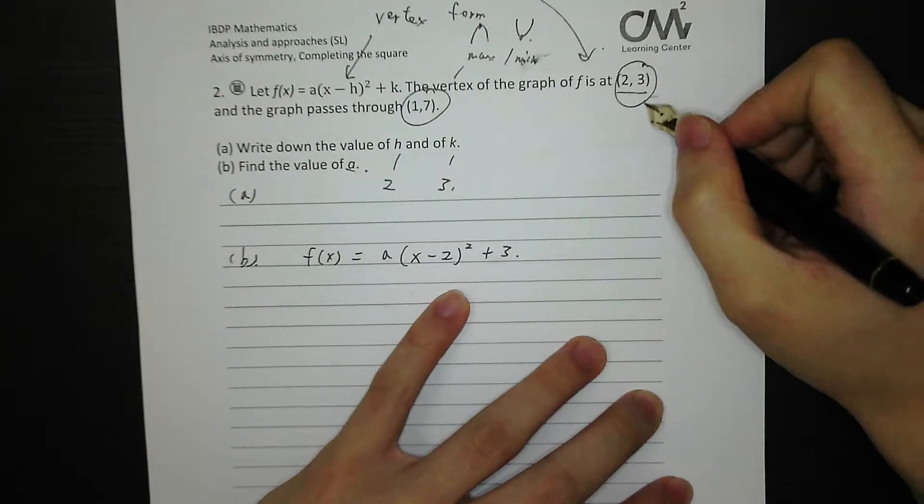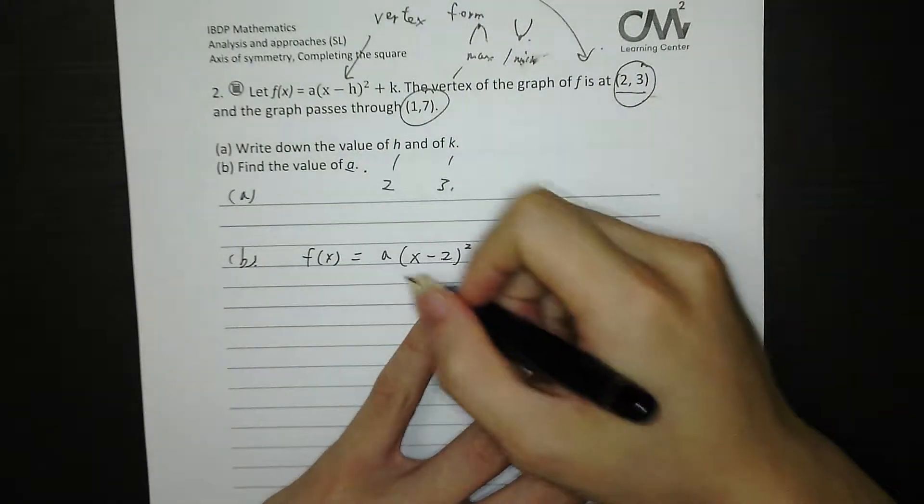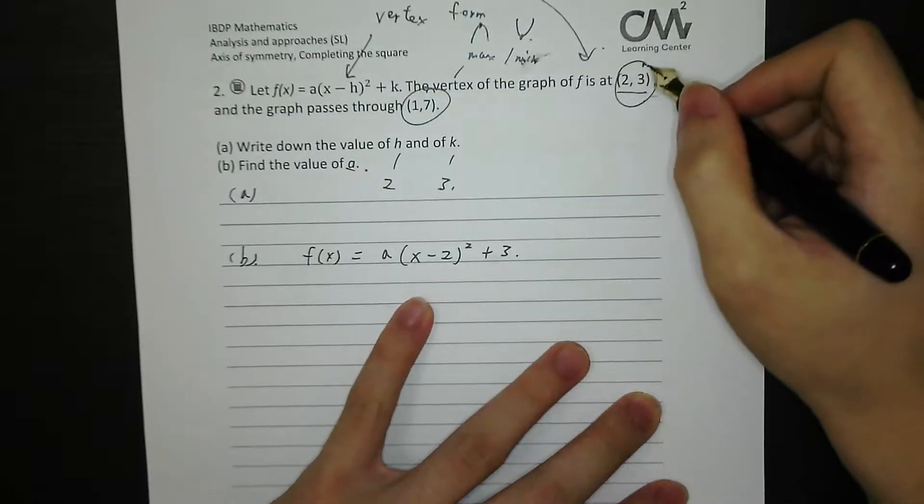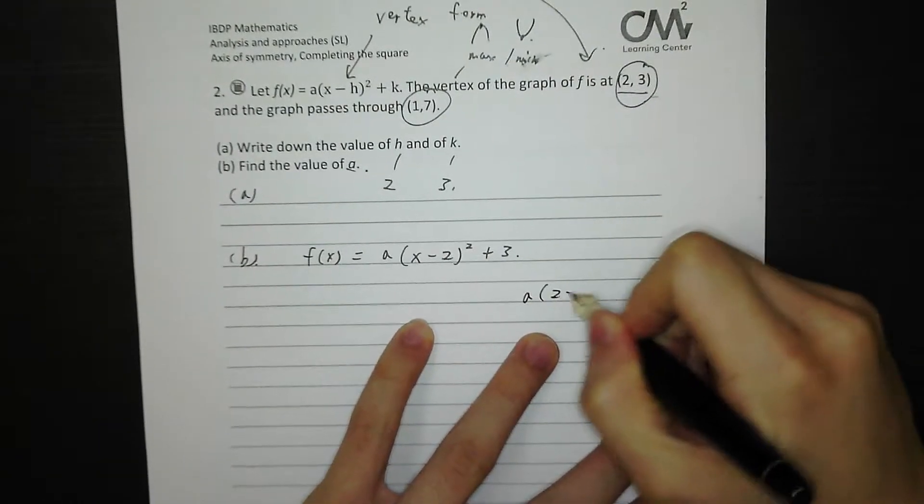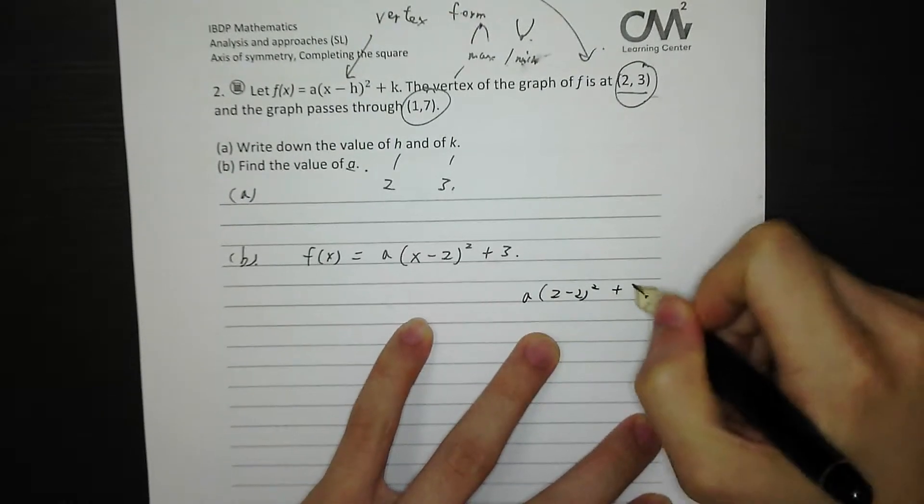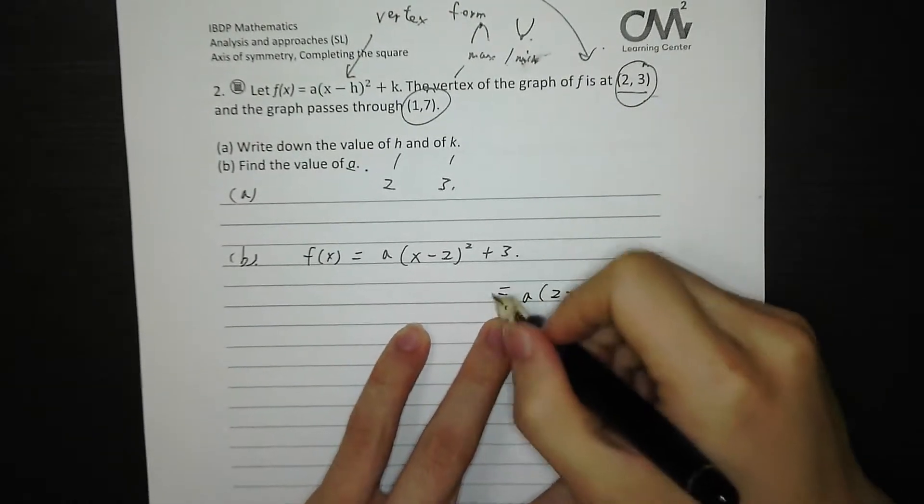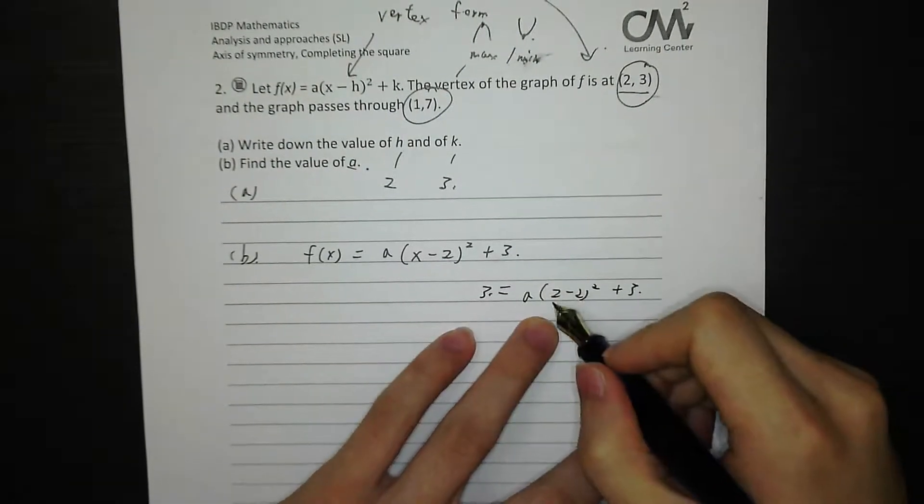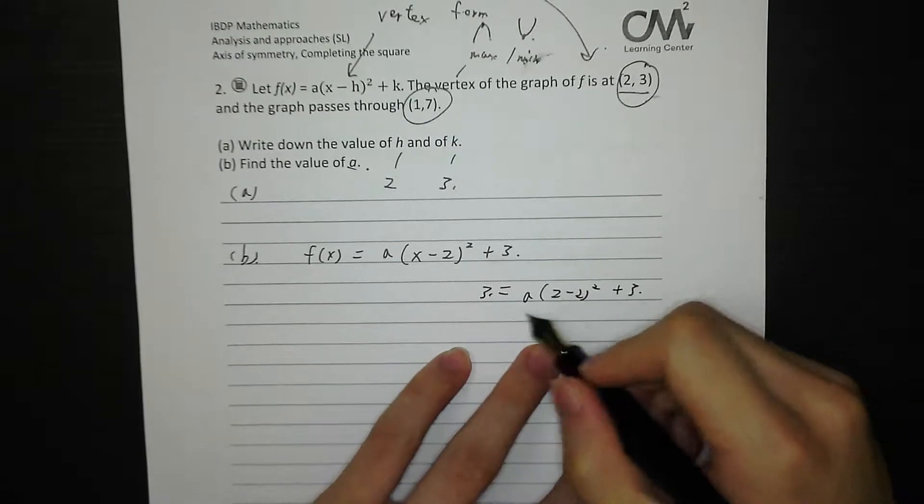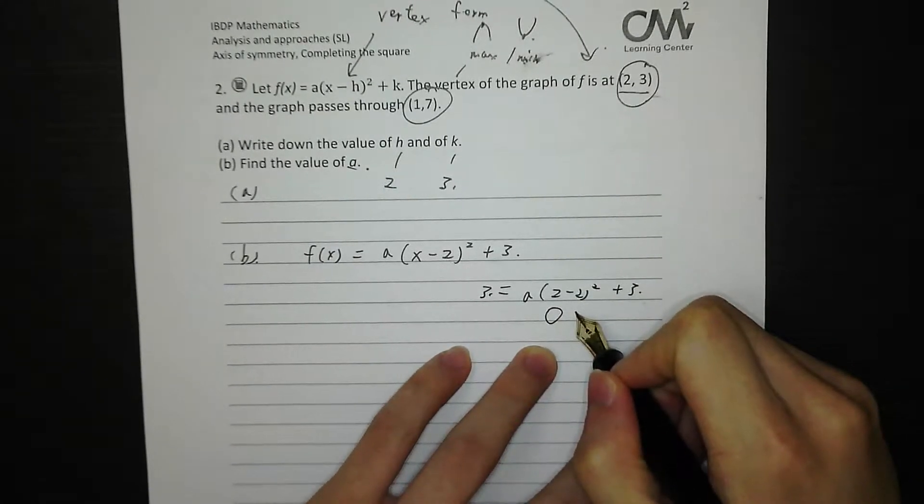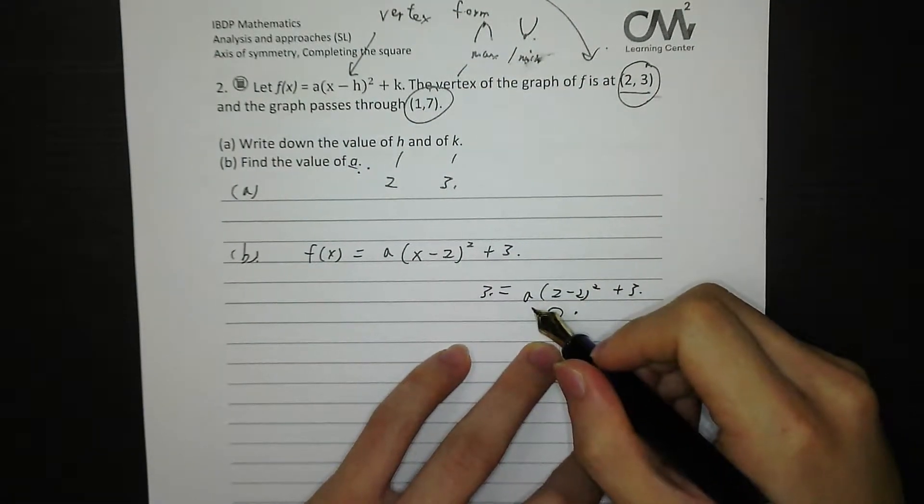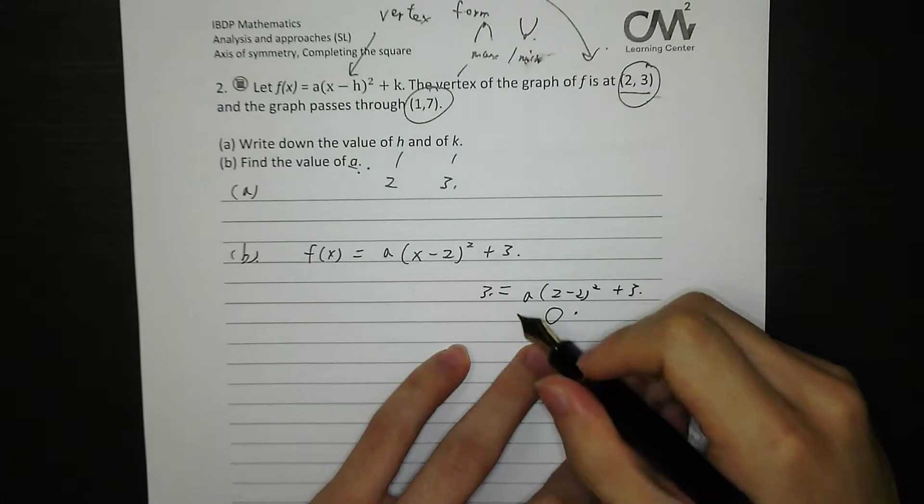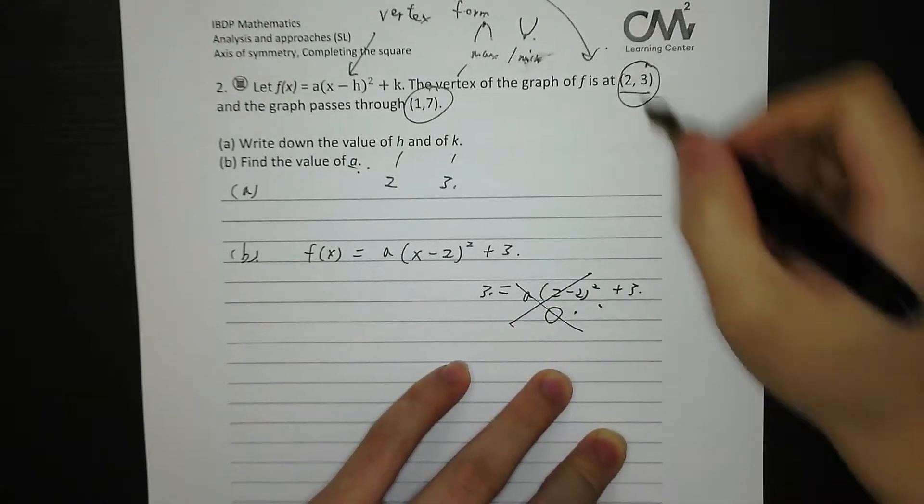But we cannot put 2, 3 into the function. Because if we sub x = 2, we get A(2 - 2)² + 3, and we sub y = 3. 2 minus 2 squared is 0, so 0 times A would be 0. But we are trying to solve for A. You see, we would eliminate the A. So we cannot sub 2, 3.